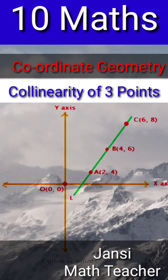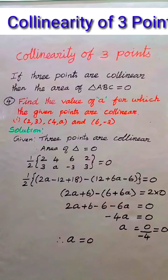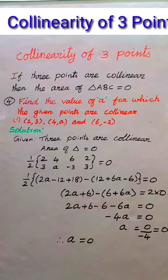Now we are going to see collinearity of 3 points. If 3 distinct points are collinear, then we cannot form a triangle because there will be no altitude, that is height. It means the 3 points lie on the same straight line.